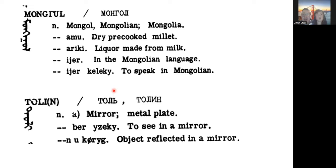This is how the dictionary looks inside. It has the traditional script, pronunciation in Roman alphabet, Cyrillic, and then English. For example, this entry is 'Mongol' — the English explanation is 'Mongol,' 'Mongolian,' or 'Mongolia,' and it includes a few usage examples.